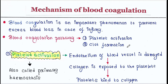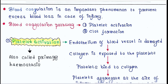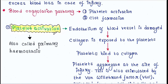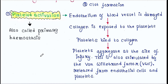First, let's talk about platelet activation, which is also called primary hemostasis. When there is a cut, the endothelium of the blood vessel is damaged and collagen is exposed to the platelets, and platelets bind to collagen. Platelets aggregate at the site of injury. This is also stimulated by the von Willebrand factor, VWF, that is released from endothelial cells and platelets.